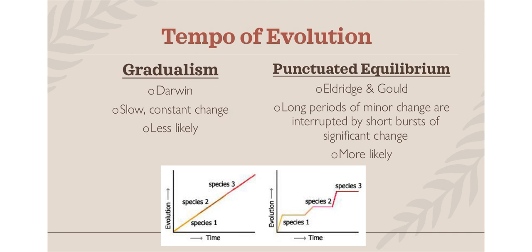The tempo of evolution refers to how fast or slow evolution occurs. Darwin believed in gradualism — slow, constant change, where one species gradually leads to another at an equal rate. Current science favors punctuated equilibrium, which looks more like a staircase: long periods of minor to no change interrupted by very significant changes that happen very quickly, in response to rapid environmental change. If a species doesn't change fast enough, it goes extinct. We now think punctuated equilibrium is the more likely scenario.